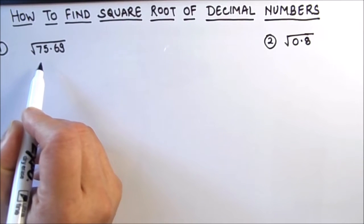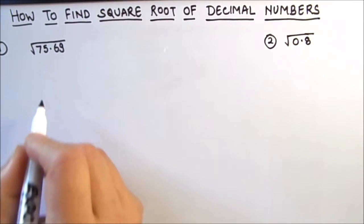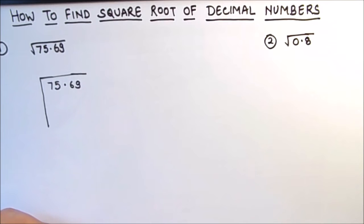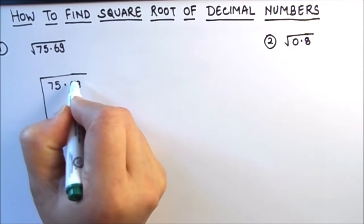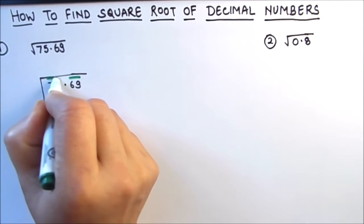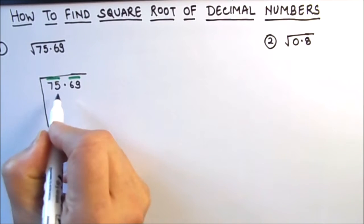Our first example is finding the square root of 75.69. The first step in finding the square root by long division method is to group the digits in pairs starting with the digit in the units place. So here we have 69 and 75 as our two groups. Each group is called a period.